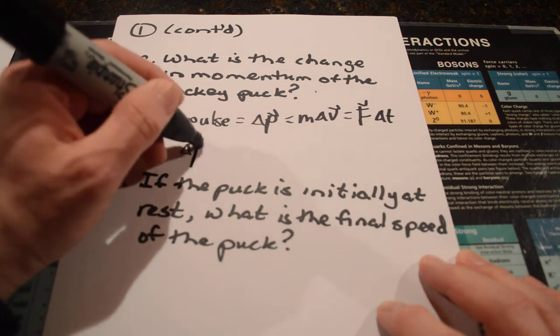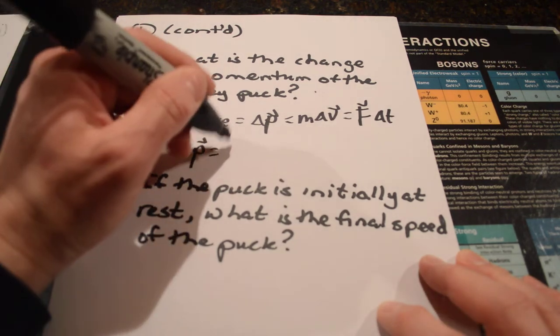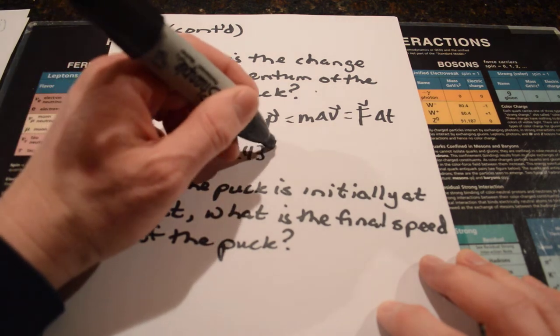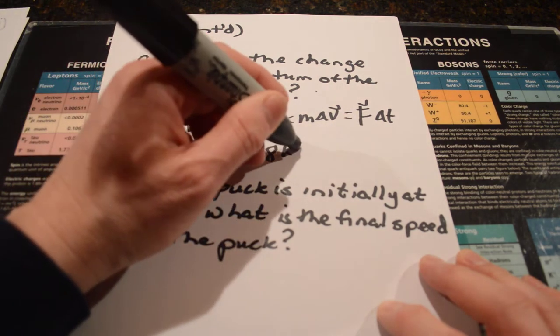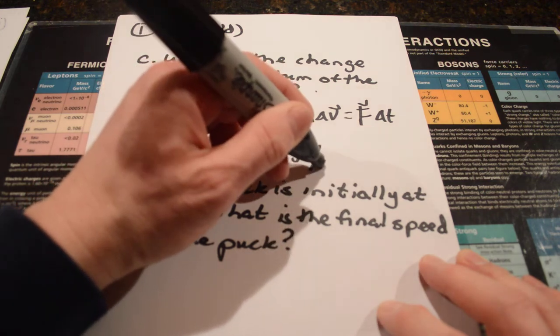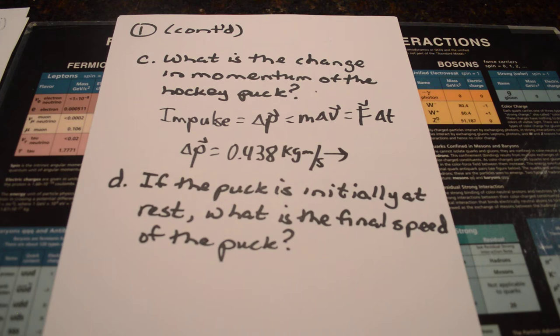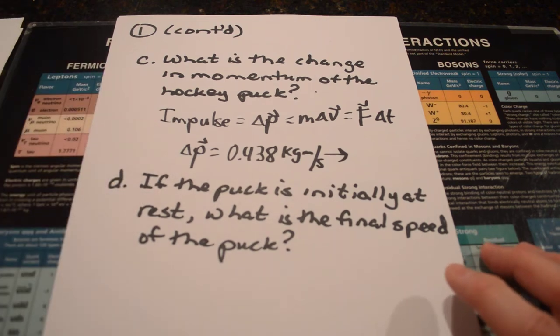So, the change in momentum for the hockey puck is just equal to the impulse of the hockey puck, and that was 0.438. You could say newton seconds, but those are also the same as kilogram meters per second. Either one of those two units is sufficient, but it's the same number. It's the exact same answer as part A.